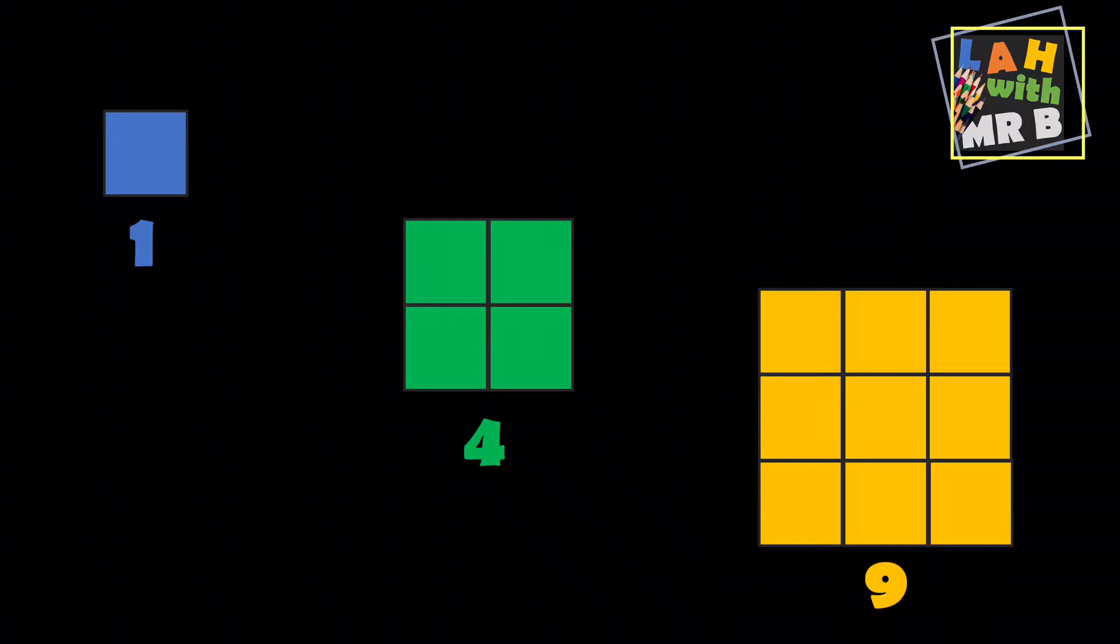You can see that for number one I used one square down and one square across. For the number four I used two squares down and two squares across. And for the number nine I used three squares down and three squares across for a total of nine squares. And if you doubt me you can count the squares yourself.